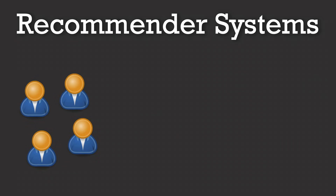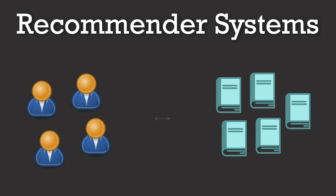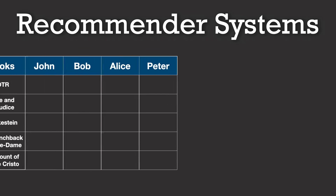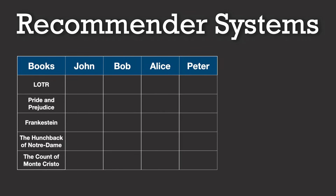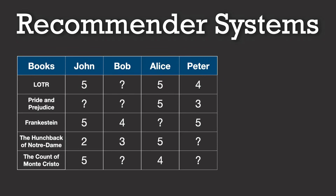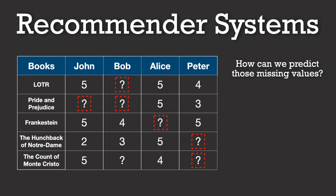Let's start by imagining that we have the following simplified scenario in our bookstore app: 4 users and 5 books that we can recommend, which create a user-book matrix of 5 by 4 — 5 rows for our books and 4 columns for our users. Each entry in this matrix is a rating from 1 to 5. Not every user has rated every book, which leaves us with a puzzle: how can we predict those missing ratings and suggest books that each user might really enjoy? This is the fundamental challenge that recommender systems aim to solve.